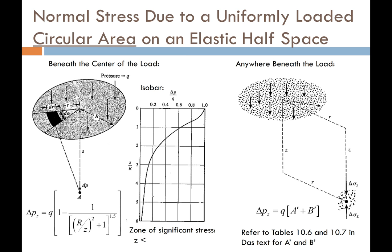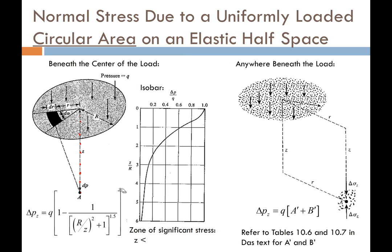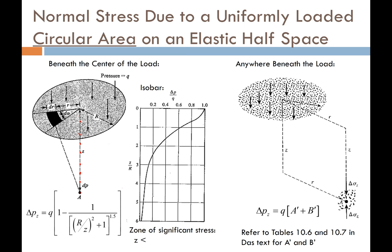Here's a slide showing solutions for a circular area. If you're interested in points beneath the center of the circle, you can approximate those solutions — the change in vertical stress — using the equation circled here. This isn't an exact solution; it's an approximation from Professor Harry Poulos. For the isobar solution, there's one isobar plot that gives us the increase in vertical stress beneath the center of the circular load, because that is typically where the stress is greatest.